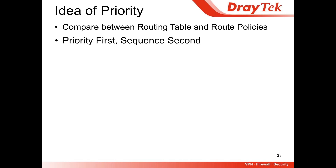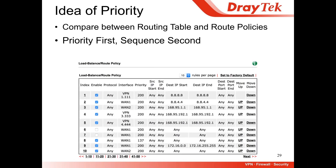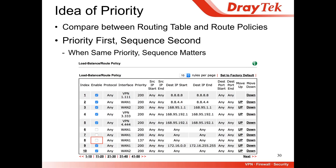Priority comes first, sequence comes second. In the past, we only compared sequence — the first matching policy was used. But in this version, we check priority first. For example, if you want to go to 8.8.8.8 and there are three matching policies — index 1, index 8, and index 10 — the router will choose index 8 because it has priority 137, which is highest. If we disable that policy, the router will choose index 1 instead of index 10 since index 1 is the first policy matched. If more than one policy has the same priority, we then check the sequence.